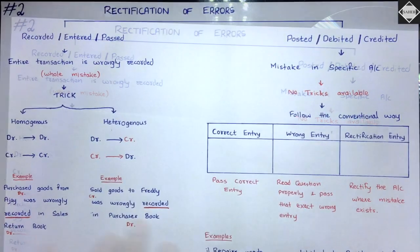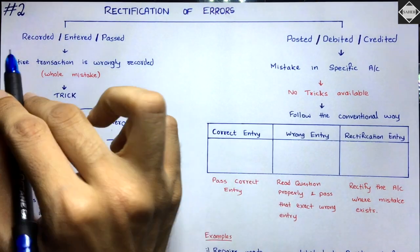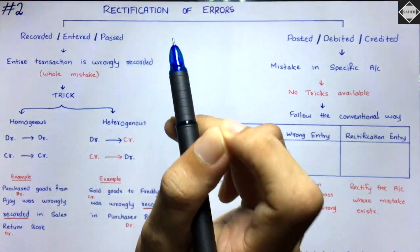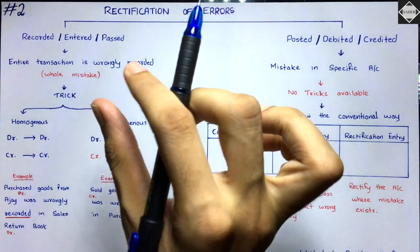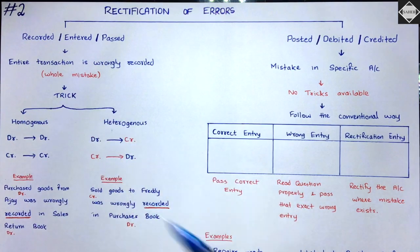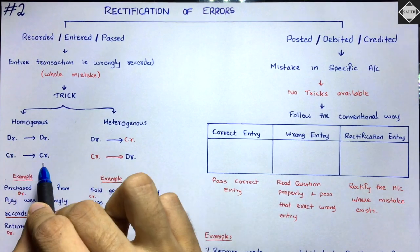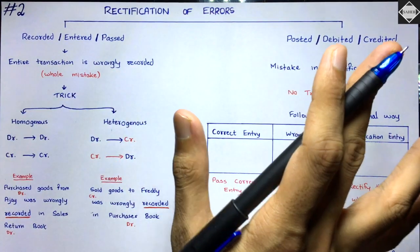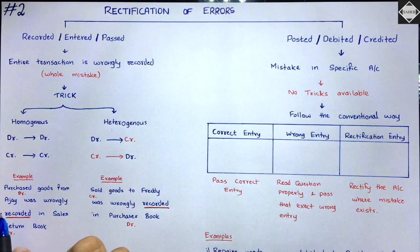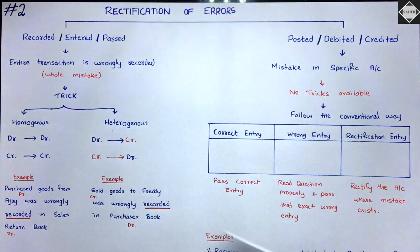Now let's come to the first category. It has two types of error: homogeneous error and heterogeneous error. Whenever you see the terms 'recorded', 'entered', or 'passed' in a question, you know you're in this first category. Then immediately classify that error into one of these two types. Homogeneous error is when debit goes into debit, or credit goes into credit — within the same boundary.